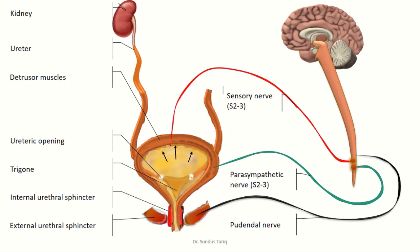From the sacral segments of the spinal cord, motor impulses arise and travel via the parasympathetic nerve back toward the urinary bladder. These parasympathetic motor nerves from S2 and S3 supply the detrusor muscle and the internal urethral sphincter. Because of this reflex, the detrusor muscle contracts and the internal urethral sphincter relaxes.